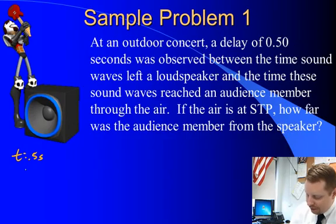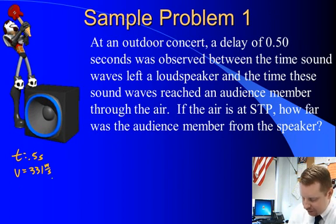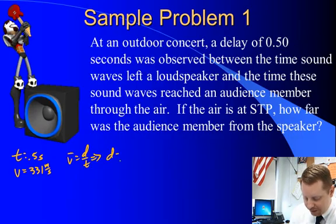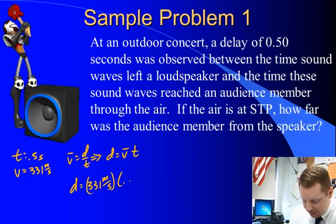Well, we know that the velocity of sound at Standard Temperature and Pressure is 331 m per second. So how far, we can use our formula average velocity equals distance over time, therefore distance equals average velocity times time, or distance equals 331 m per second times our time, 0.5 seconds, for a total distance of about 166 meters.